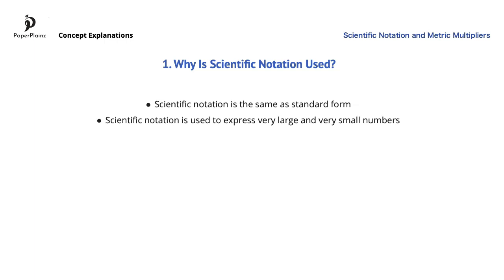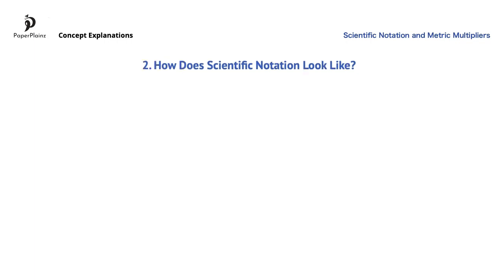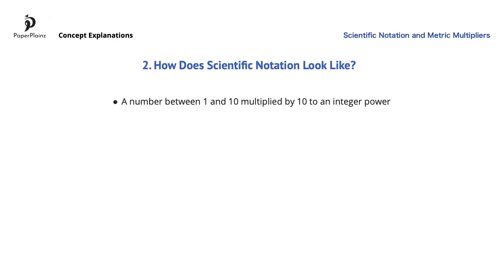For example, the distance between stars is very large, while the diameter of an atom is really small. Scientific notation is a number between 1 and 10 multiplied by 10 to an integer or whole number power.